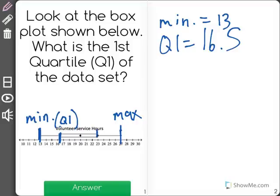On the opposite end of the box plot is quartile 3, the third quartile, which has a value of 23.